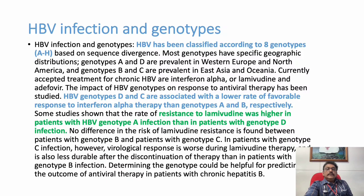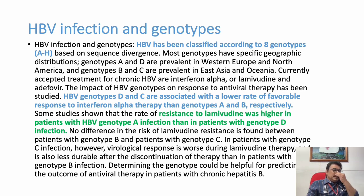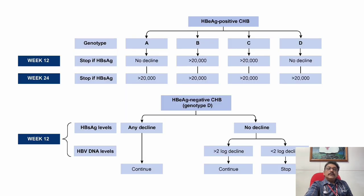Many viral infections respond differently depending on genotypes. There are eight genotypes in Hepatitis B virus. HBV genotypes D and C are associated with lower rates of favorable response to interferon alpha therapy compared to genotypes A and B. Resistance to lamivudine is higher in patients with HBV genotype A infection than those with genotype T infection. Genotyping is very important to know prognosis and drug response to antivirals.